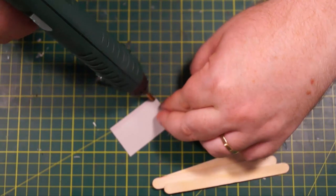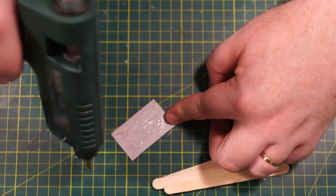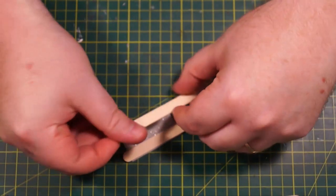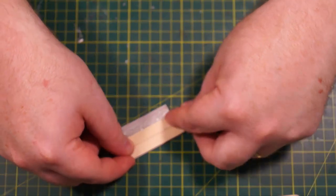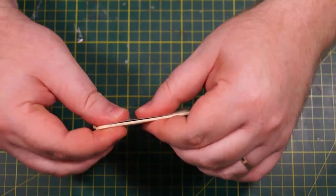Then flip it over and run some hot glue around on the back and we're going to place down the lollipop sticks right up to the edges, right at the edge and then right up against each other. And that's going to form the back of the mirror.